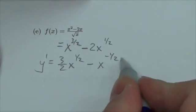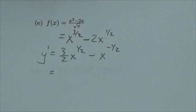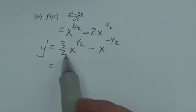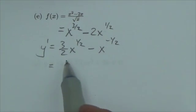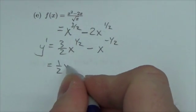And now here, in order to simplify this, what I might do here is factor out the common factor of a half and x to the negative 1/2. So this will be 1/2 x to the negative 1/2.